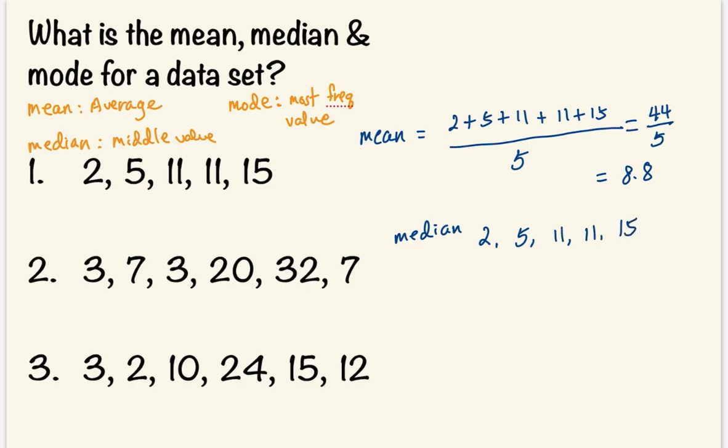Now we have 2 here, and 2 here. And so our median is just the middle number, which is 11.